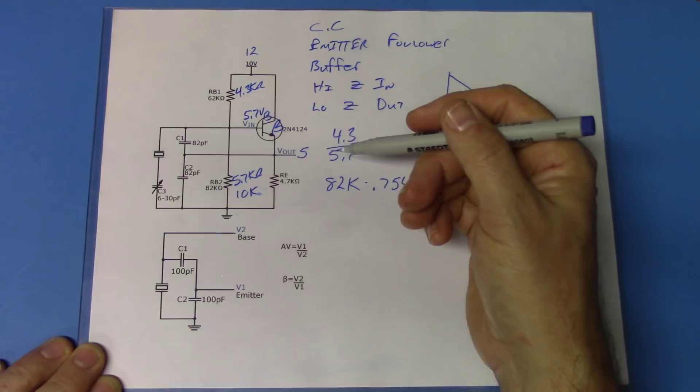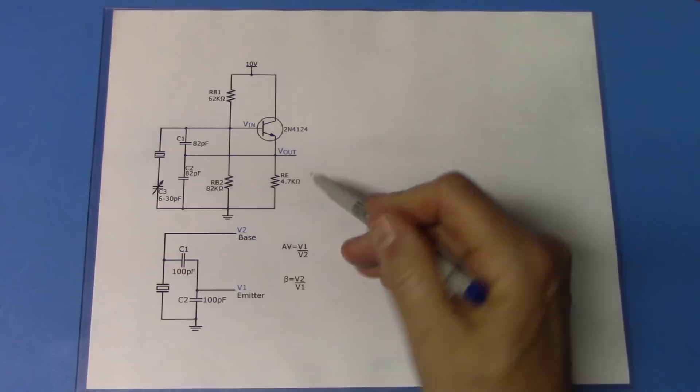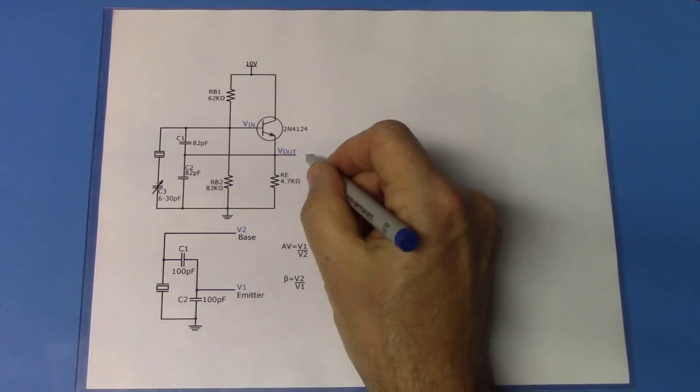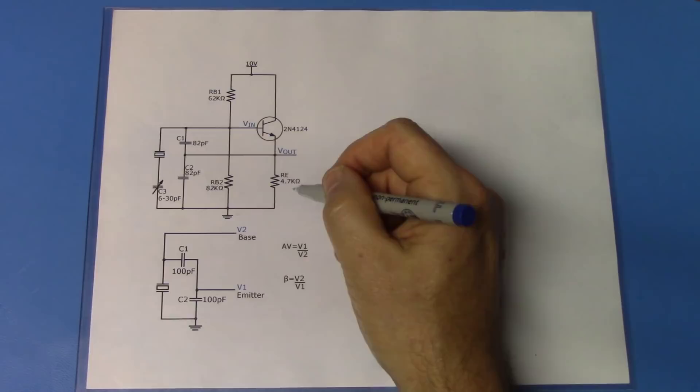Now I have to determine the resistor to use on the emitter. Since I'm looking at about 5 volts at the output, 5 volts divided by 4.7K is going to give me just over 1 milliamp, and that's going to give me a transconductance that will work well for this circuit — a transconductance of around 35 to 40 millisiemens.